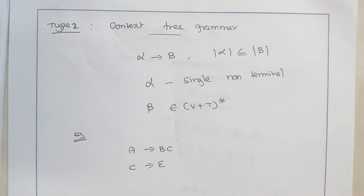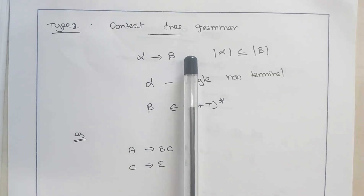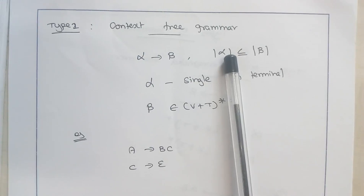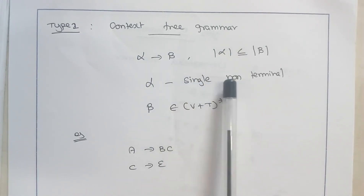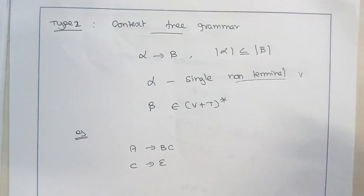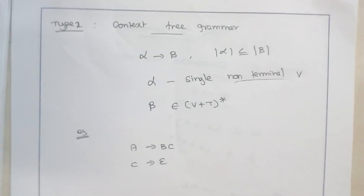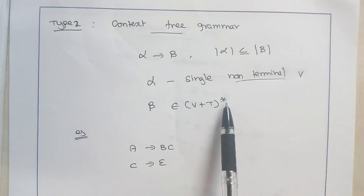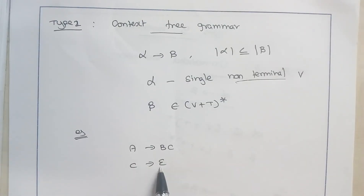Next is type 2 grammar, which we call a context free grammar. In context sensitive grammar, we place some additional restriction, and that is called a context free grammar. Again, the grammar is of the form alpha tends to beta, and the length of alpha is less than or equal to length of beta — this condition is similar to that of a context sensitive grammar. But here, alpha is always a single non-terminal, which is a variable. Beta might be either a variable, a terminal, or a combination of variable and terminal, and since it is to the power of whole star, we can have an empty string also.